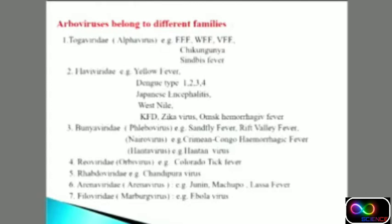Arboviruses belong to different families. First is Togaviridae, which includes alpha viruses such as Eastern Equine Encephalitis, Western Equine Encephalitis, Venezuelan Equine Encephalitis, Chikungunya, and Ross River fever. Another family is Flaviviridae, which includes Dengue virus, Japanese Encephalitis, Yellow Fever, and also newer terms like Zika virus and Kyasanur Forest Disease.